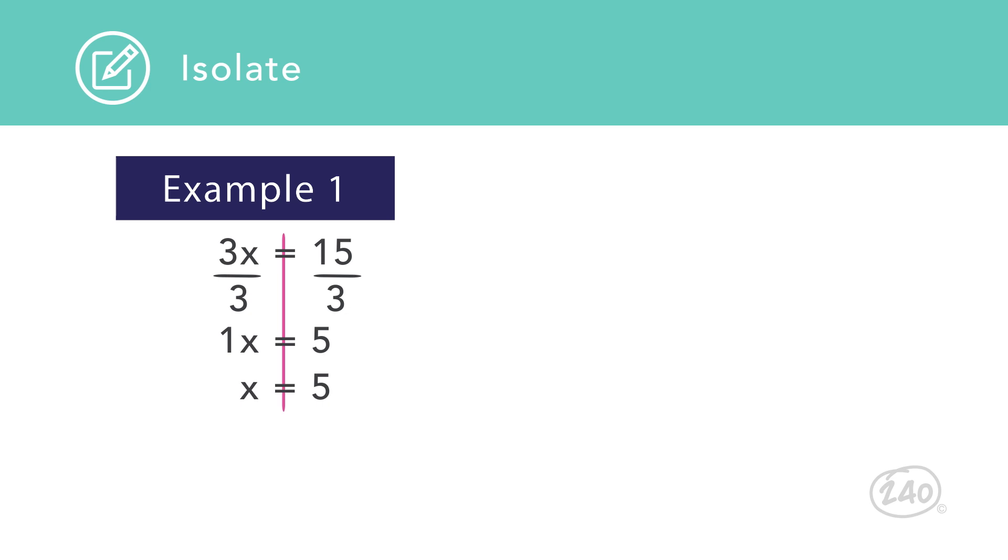In other words, when isolating a variable, inverse operations should always be applied in the reverse order of operations, starting with undoing addition and subtraction and ending with undoing parentheses.